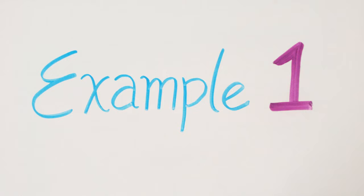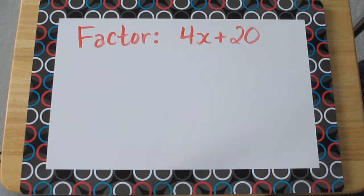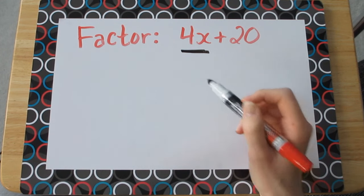Let's take a look at the same example, but work backwards. Factor 4x plus 20. Here we need to look at the factors of each number. So let's look at the first term here, 4x. We'll ignore the x for now.